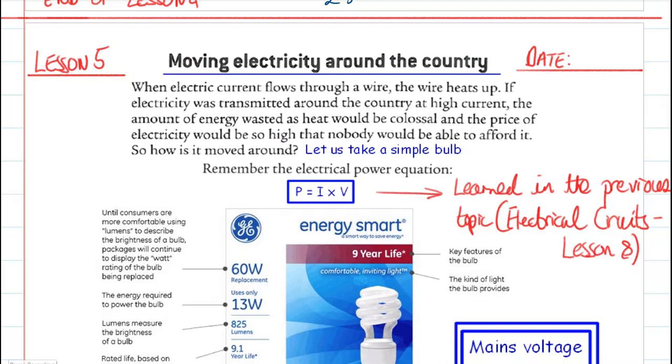Welcome back to your ten. This is lesson five of generating electricity. We're looking at how we move electricity around the country. So please, if you can put at the top, lesson five, date, underline with a ruler please.